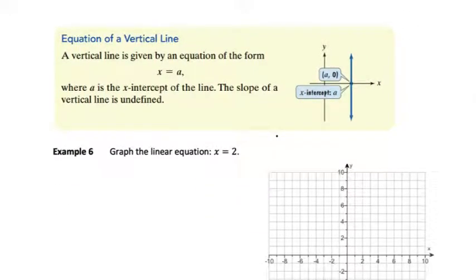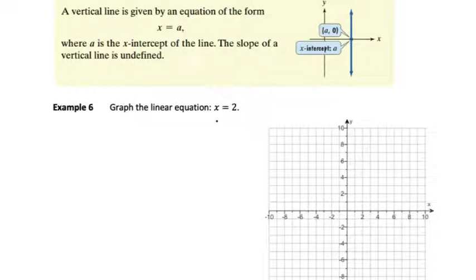Next we're going to talk about vertical lines. Vertical lines are given by an equation of the form x equals a. So horizontal lines are y equals a number, there's no x in the equation. A vertical line is x equals a number and there's no y in the equation. The number that x equals is the x-intercept and so we can plot that point on the x-axis and then draw a vertical line through that point.